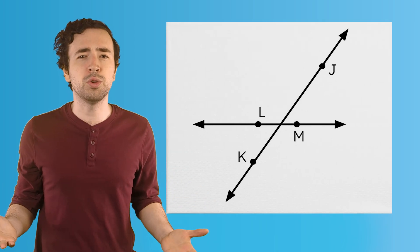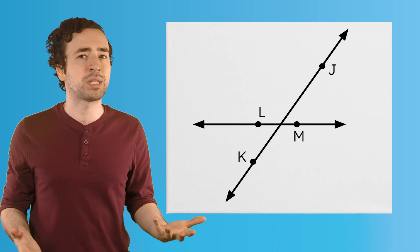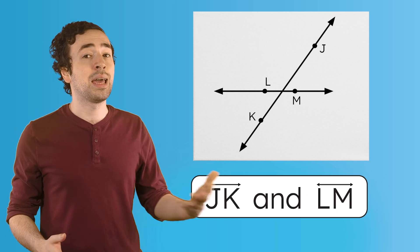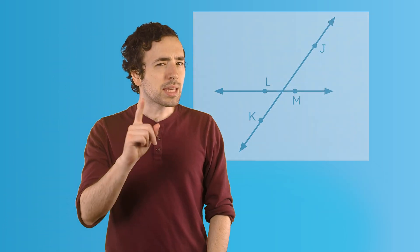There isn't a special symbol we use when naming intersecting lines — we just name them line JK and line LM. Can you make parallel lines with your arms? What about these lines — what kinds of lines am I showing? Intersecting. Now what kinds of lines am I showing? Perpendicular, because of the square corner.